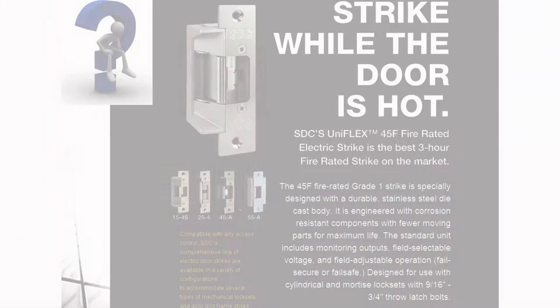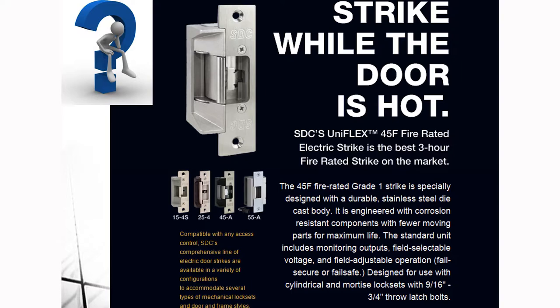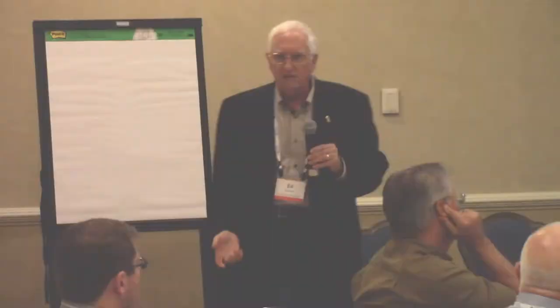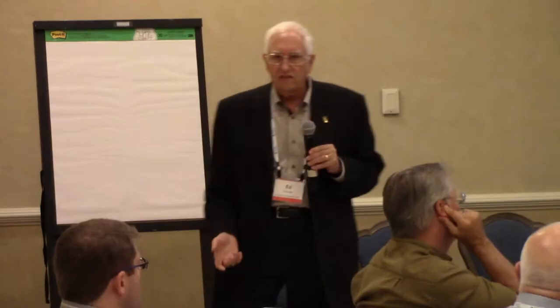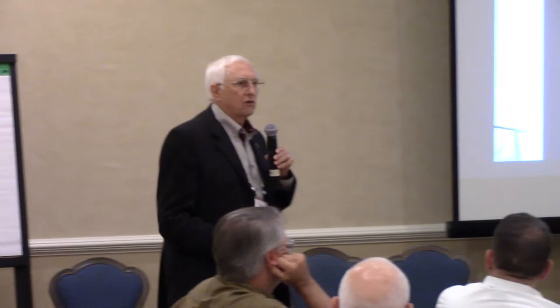I got this in my email three days ago — I had to put it in here. It says 'strike while the door is hot' — an electric strike advertised for a fire-rated door, available in field-adjustable fail-secure or fail-safe. But if a fire-rated door has to self-latch, how do you use an electric strike to make it latched? Especially a fail-safe one — as soon as you drop power, there's no latching. I don't even know how they can advertise this.